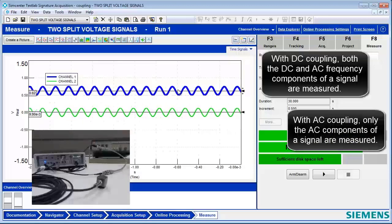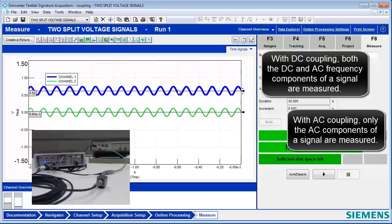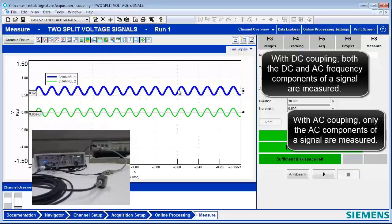So it doesn't measure the offset, which is the DC component. It only measures the amplitude. There's actually an offset on the green channel, but we can't see it because we set the mode to AC coupled. Correct. Interesting.